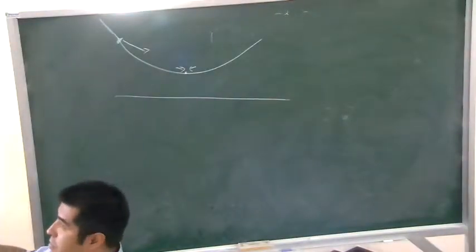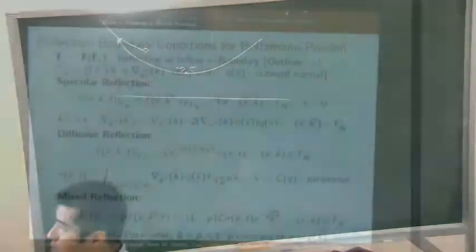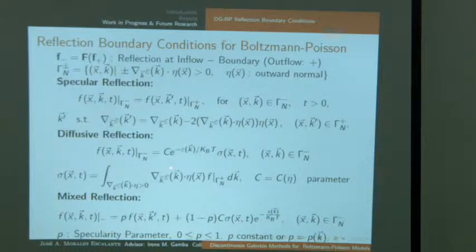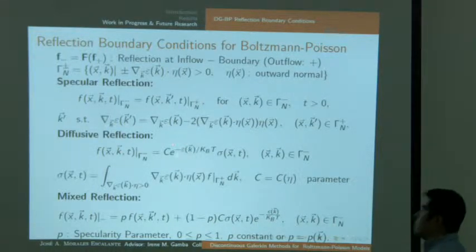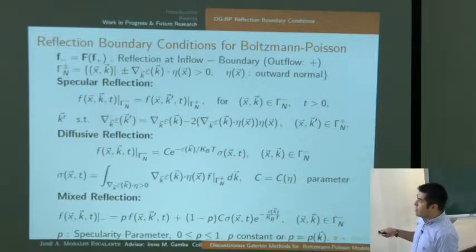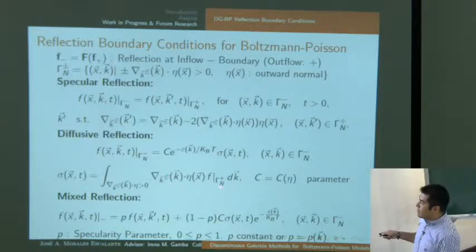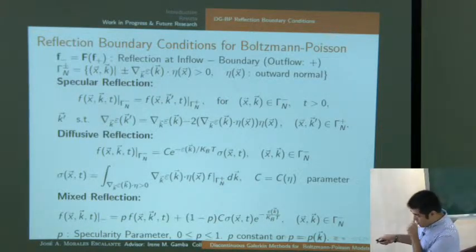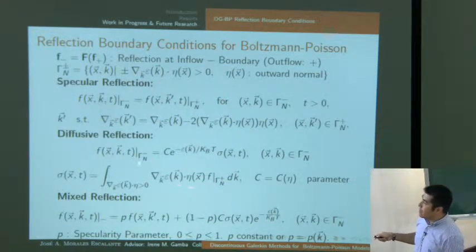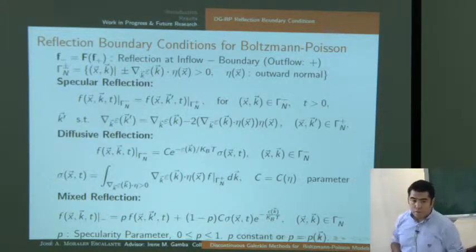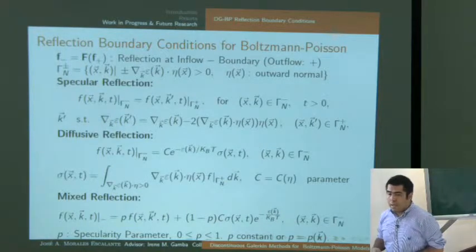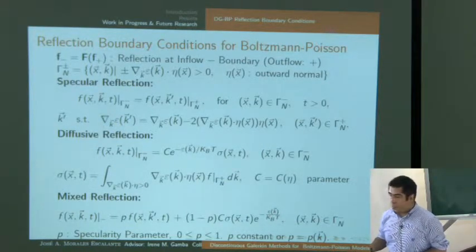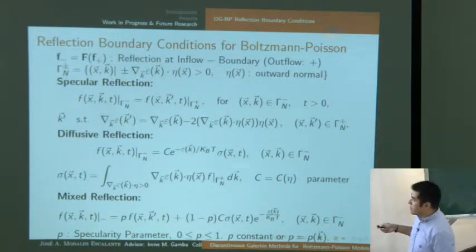For diffusive reflection, the inflow value is a Maxwellian multiplied by an integral over the outflow values weighted by the velocity normal component. A constant C satisfies the zero flux (impenetrability) condition, ensuring mass cannot leave the domain. For mixed reflection, the boundary value is a convex combination of the specular and diffusive parts, with a specularity parameter p ranging from 0 to 1, which can be constant or a function of momentum k.